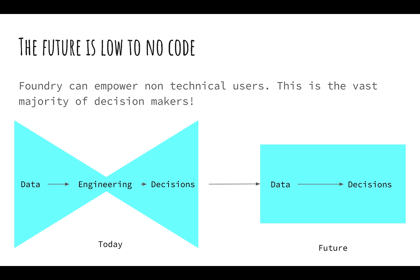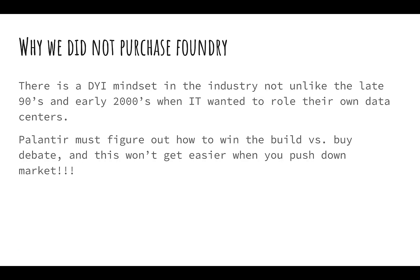Insightful models are really going to be a commodity in the future because we're all making models that are basically in the same category - maybe they need to be tuned to your particular data set. In the future the model is the commodity, the science is the commodity, and really it's the platform that enables the use of those models that's the winner. It's where we get to where we just go from data to decisions, and Foundry is on the cutting edge of that. I think they have the best low-code no-code solution out there.